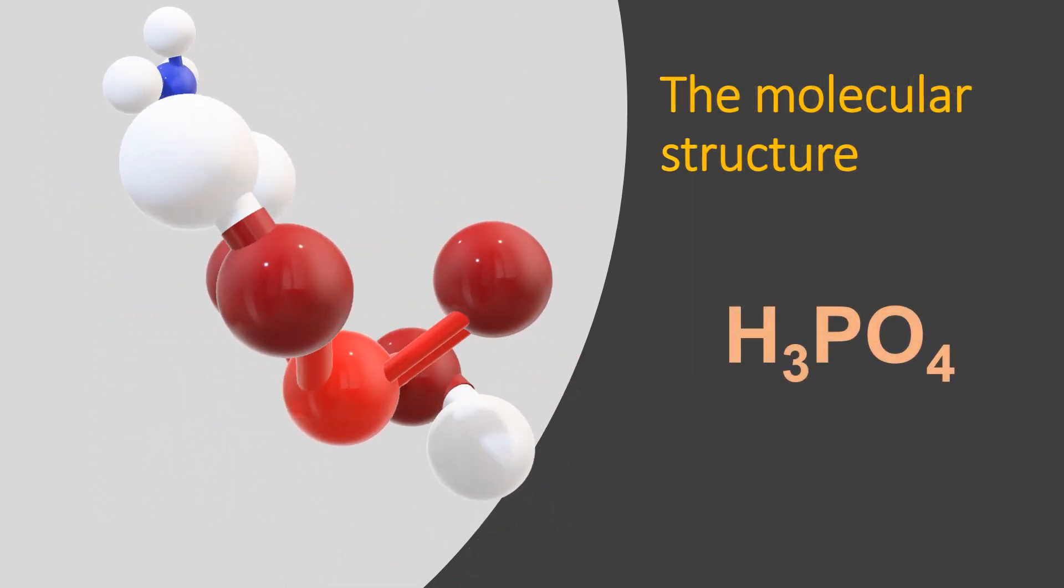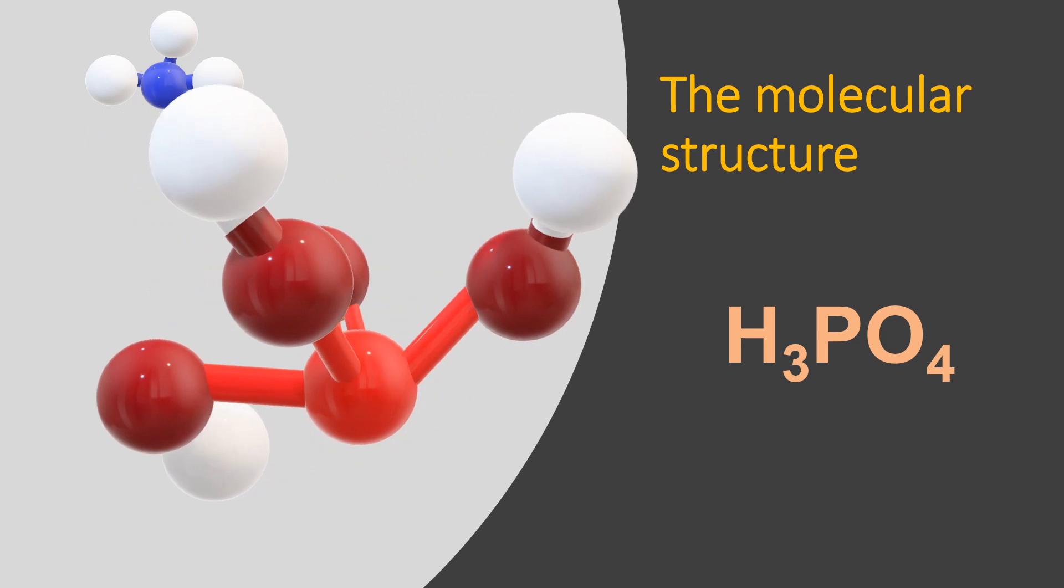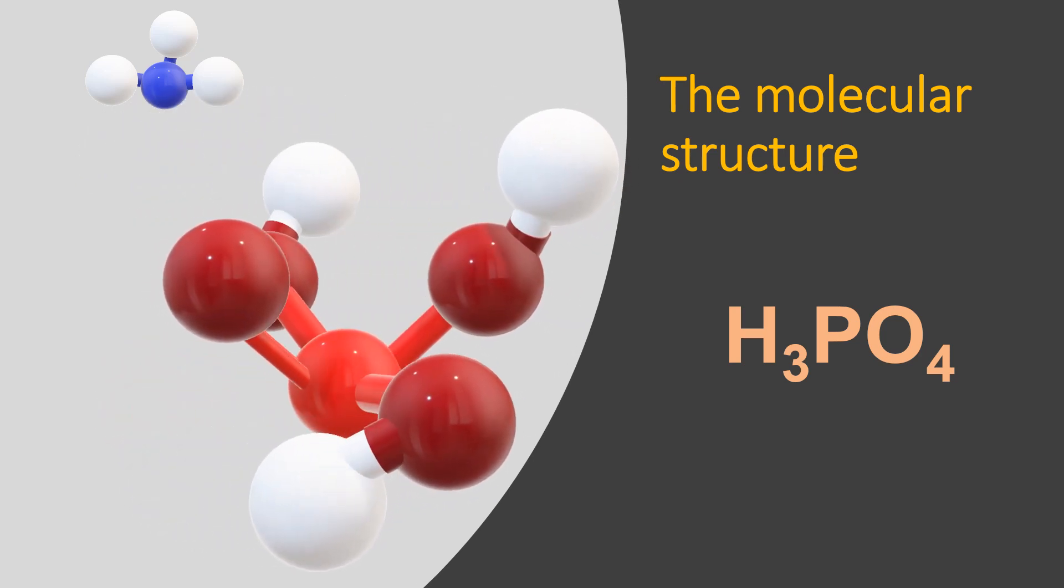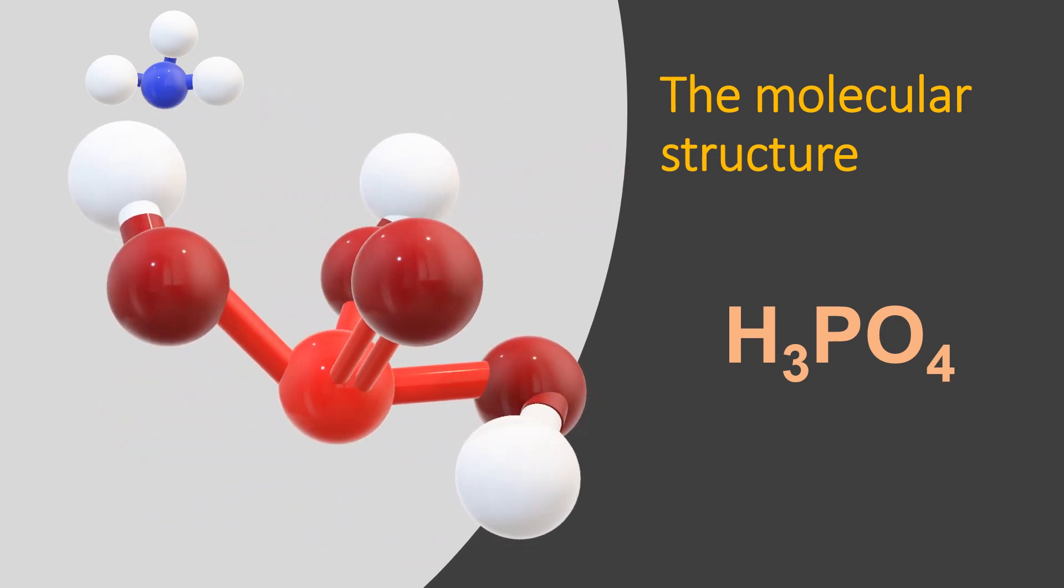The chemical structure shown here is of one phosphoric acid molecule. It is formed by three atoms of hydrogen, one atom of phosphorus and four atoms of oxygen.